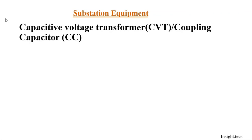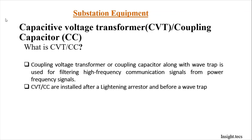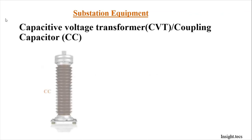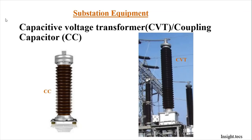Similar to the wave trap, there is another power communication device — the capacitive voltage transformer (CVT) or coupling capacitor (CC). The CVT or CC, along with the wave trap, is used for filtering high frequency communication signals from power frequency signals. This is important because the relay that communicates between substations for line protection operates only at 50 Hz or 60 Hz. CC or CVT are installed after the lightning arrestor and before the wave trap.